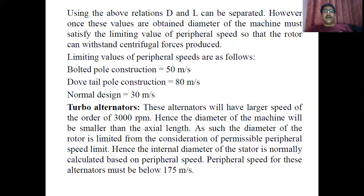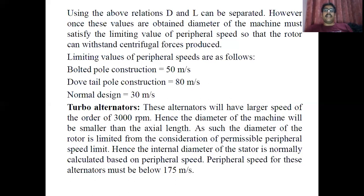To summarize: to separate D and L you use two main things — number one, the ratio of axial core length to pole pitch, L/τp, with a value between 0.8 to 0.3; and number two, peripheral speed Va = π·D·ns, which depends on the numerical. Based on the given data, you design the main dimensions. Before watching this video, go through the previous video on the output equation of a synchronous machine to understand on which factors it depends, after which the separation of D and L can be carried out.